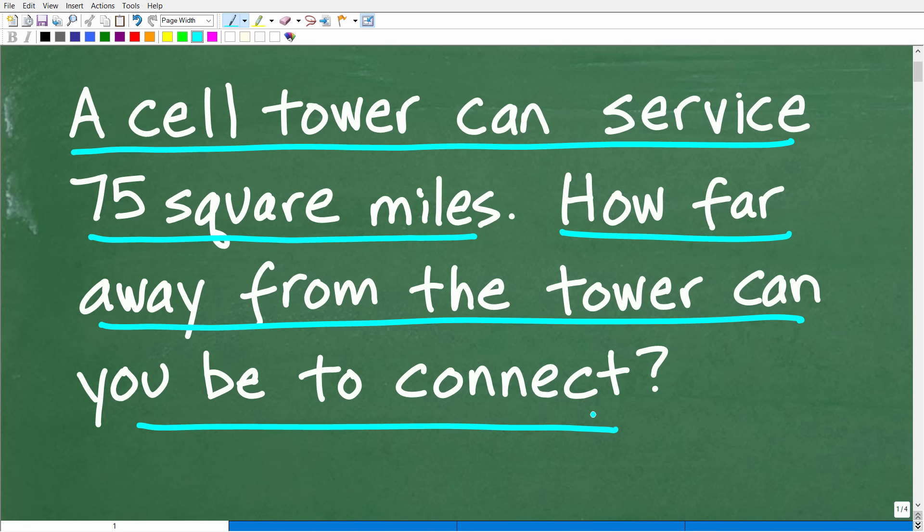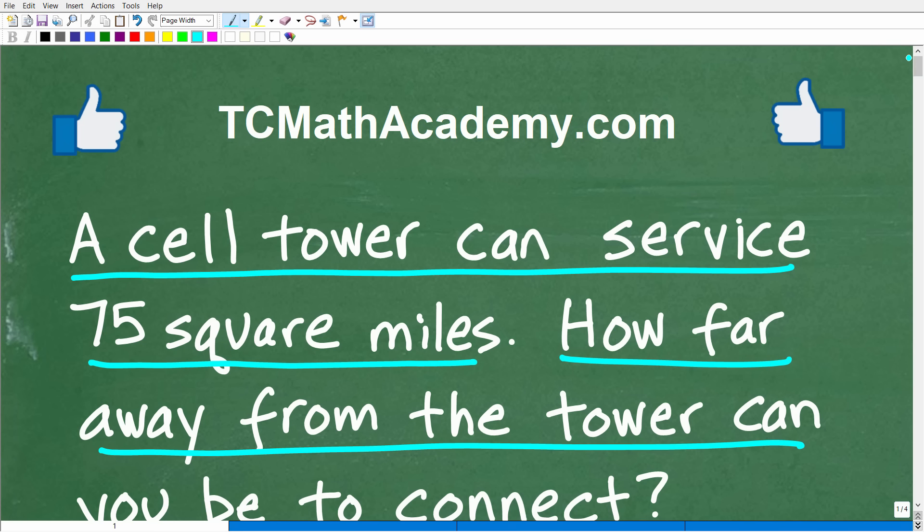Matter of fact, let me go ahead and read the problem. It is the following: a cell tower can service 75 square miles. How far away from the tower can you be and still connect? So this is the problem, and if you're a little bit confused, I'll clarify it in just one second. But first, I want to give you a full opportunity to show off your math skills so you can solve this problem all on your own without any help from me. If you have the answer, go ahead and put that into the comment section. I'll show you the solution in just one second and then of course, I will explain the solution to this problem step by step.